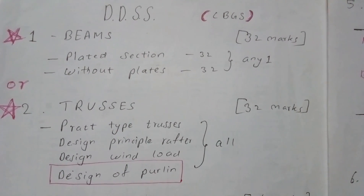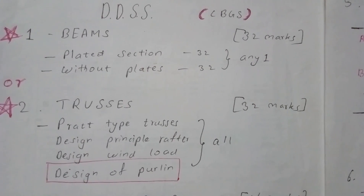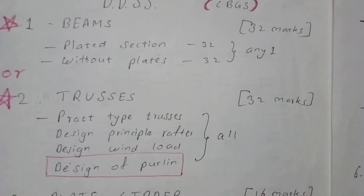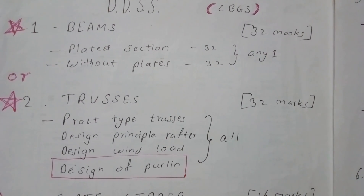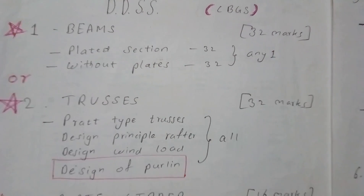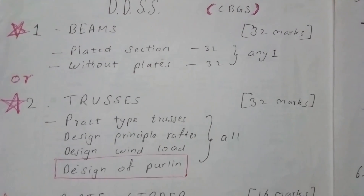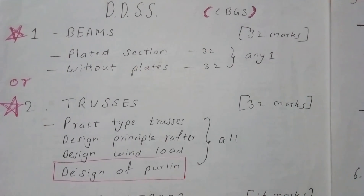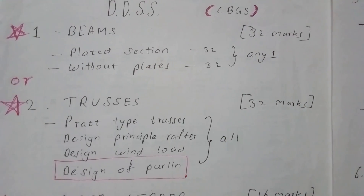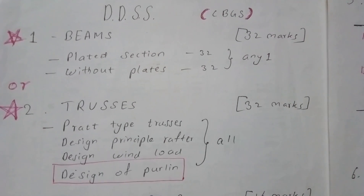In Trusses, four questions may be asked: design practice, design principles, design of wind, and design of purlin. However, design of purlin is very rarely asked — it appeared in December 2016 and maybe once or twice otherwise. If you have very little time, skip design of purlin and focus on the other three topics.